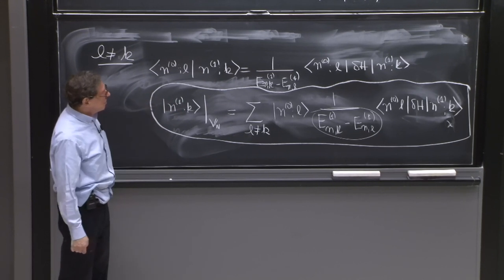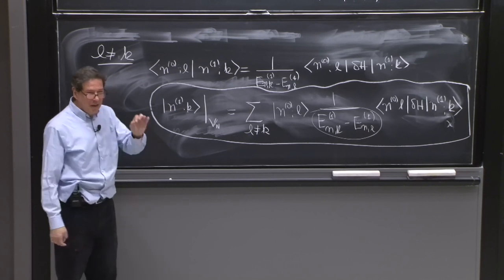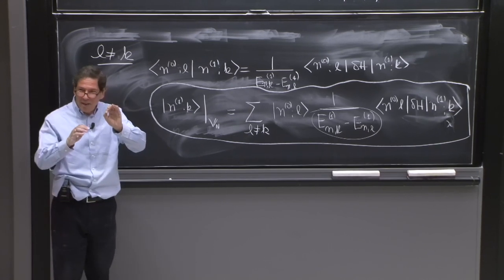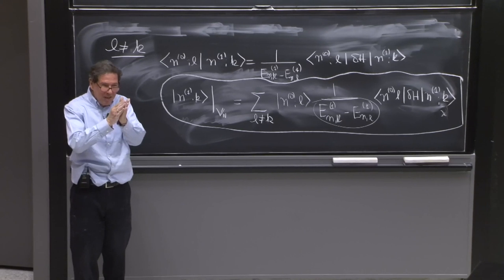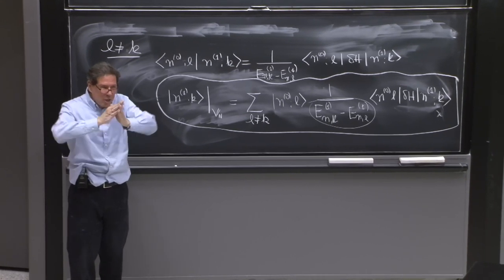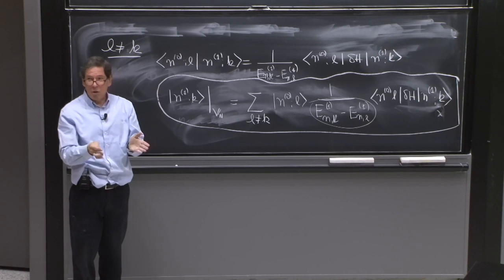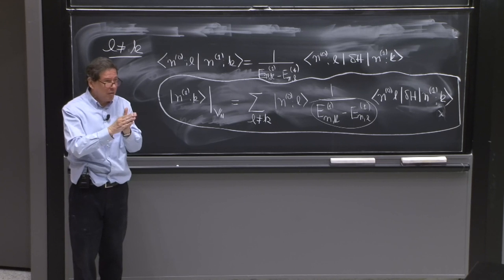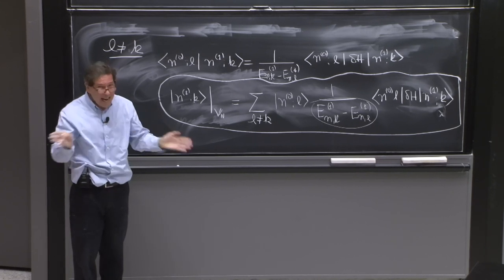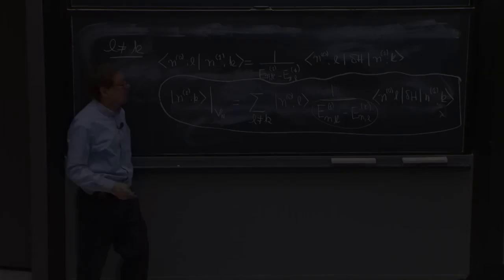This completes our analysis of degenerate perturbation theory when the perturbation — the first order perturbation — splits all the levels. What we're going to do now is treat degenerate perturbation theory when the first order correction doesn't split any of the levels at all. What happens? What can we do?